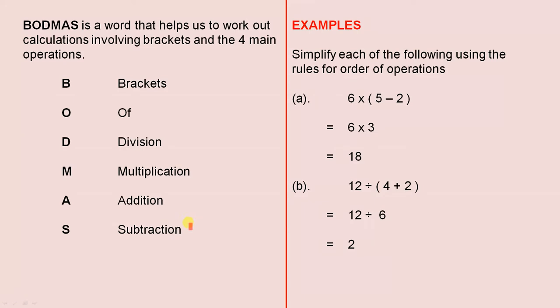Now let's look at some examples and we'll see how we use these rules. Simplify each of the following using the rules for order of operations. So the first one is 6 × (5 - 2). The B, which stands for brackets, tells us that we have to work this out first. So anything inside the brackets has to be worked out first. 5 - 2 gives us 3. 6 × 3 is 18.